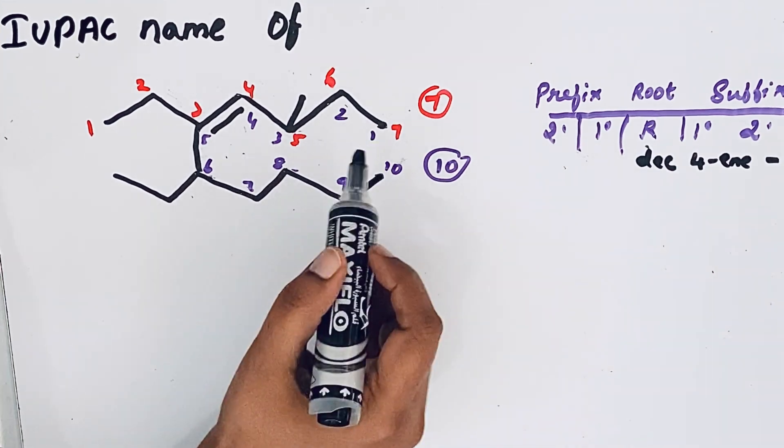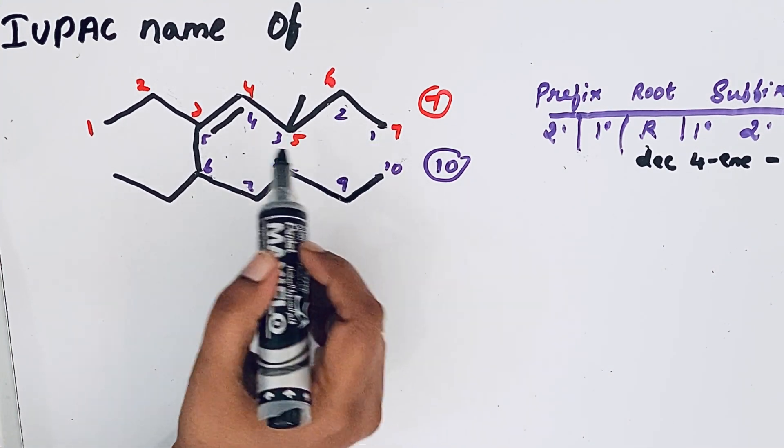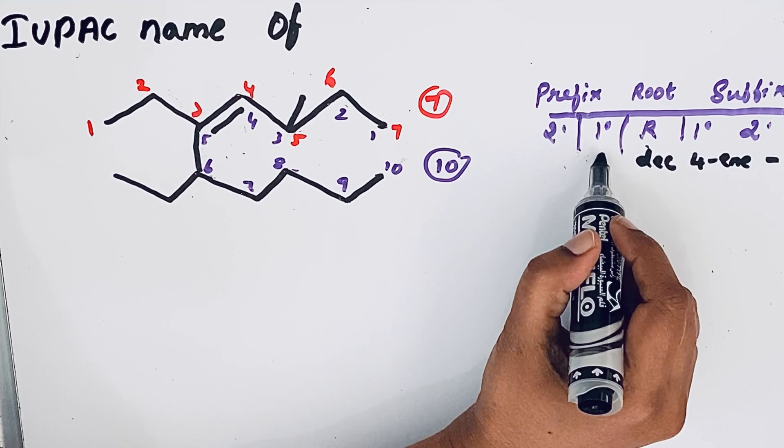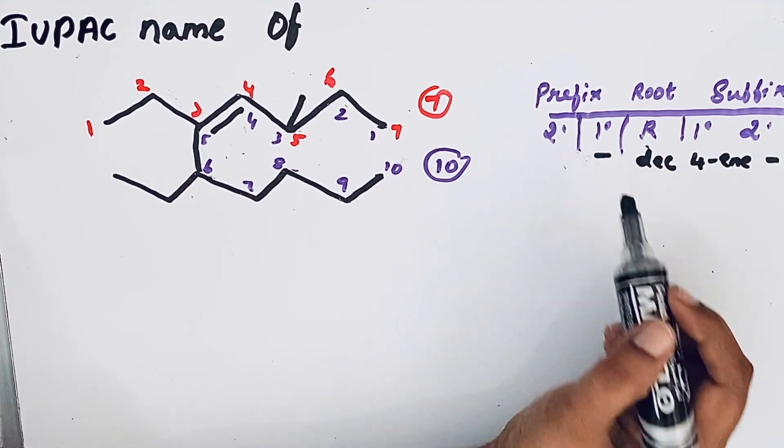Then for primary prefix, this compound is not cyclic, so the word cyclo is absent. Primary prefix is absent.